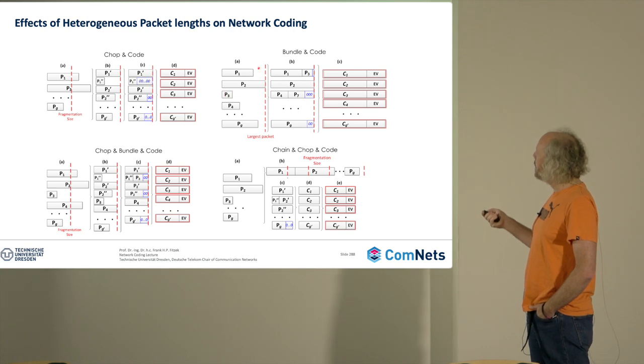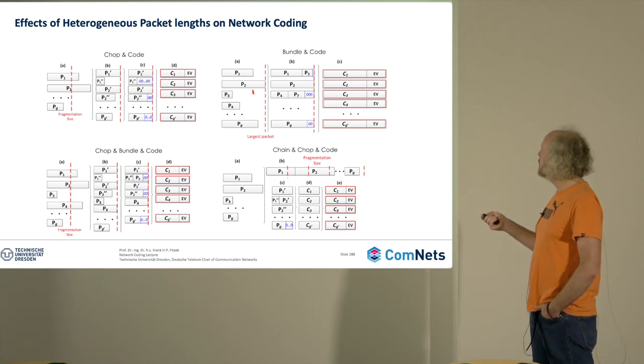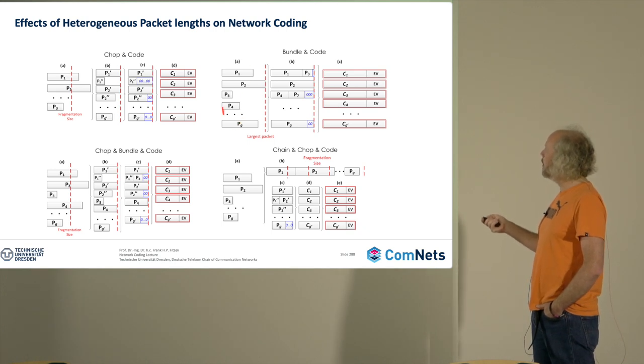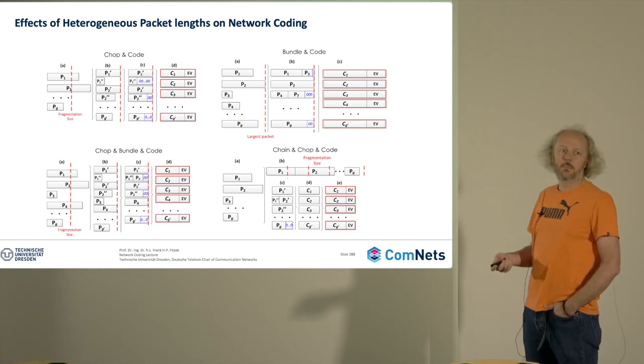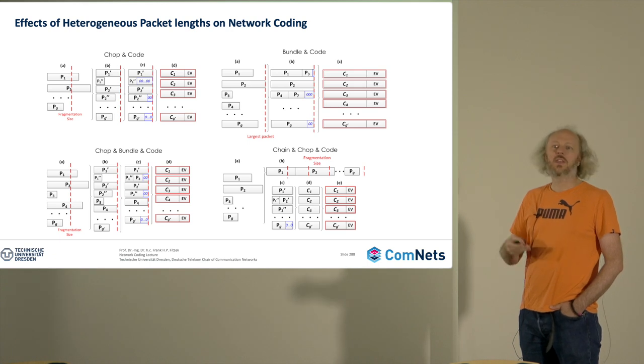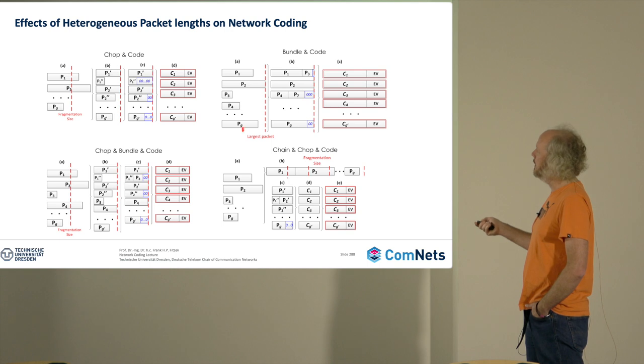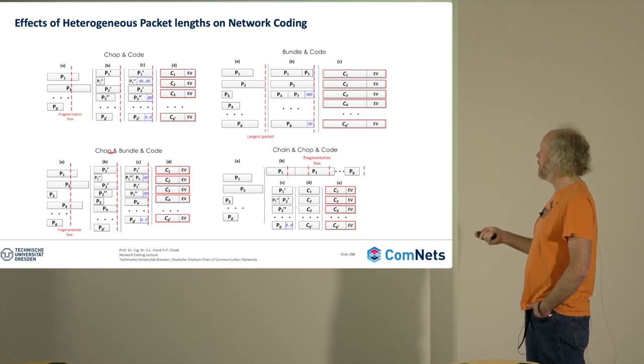What you see here, for example, if you do bundle and coat and you move packet three up here, this means that you need all the packets p1 to pg to see them in order for optimal placement. So if you think about latency, it's not a good idea to do something like that. The bundle and coat and also chop bundle and coat means I need to see all g packets.